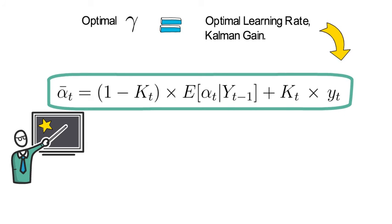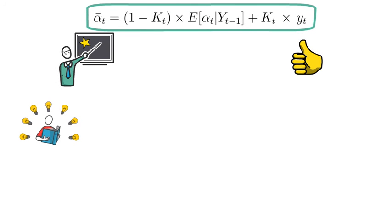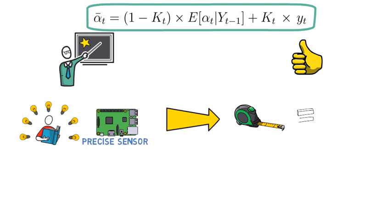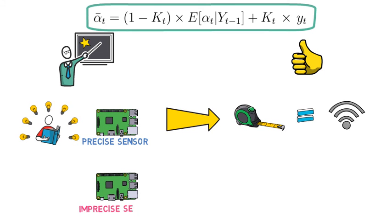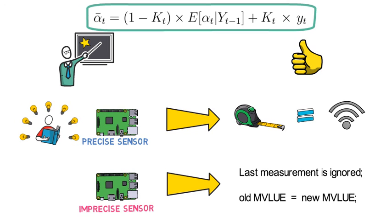The intuition for that equation is really great. It says under perfect learning, which happens when the sensor is working perfectly, the measurement yt coincides with the sent signal alpha t. On the other hand, if the sensor is a total waste of time, meaning it's highly imprecise, then the most recent measurement is simply ignored and the old MVLUE equals the new one, which says that no learning takes place.